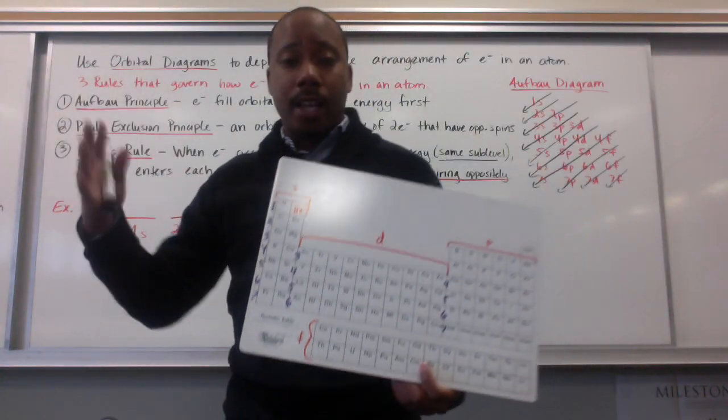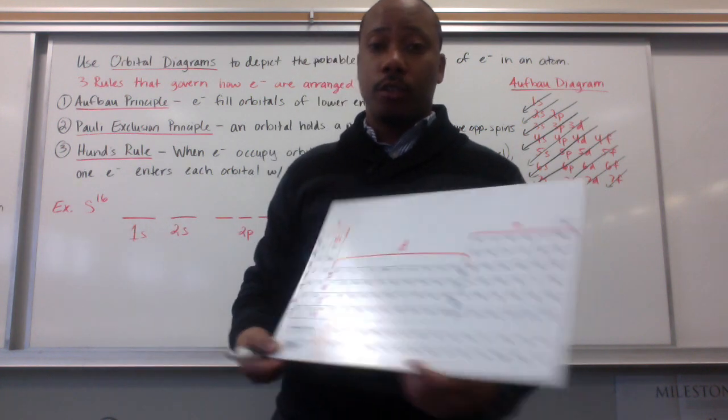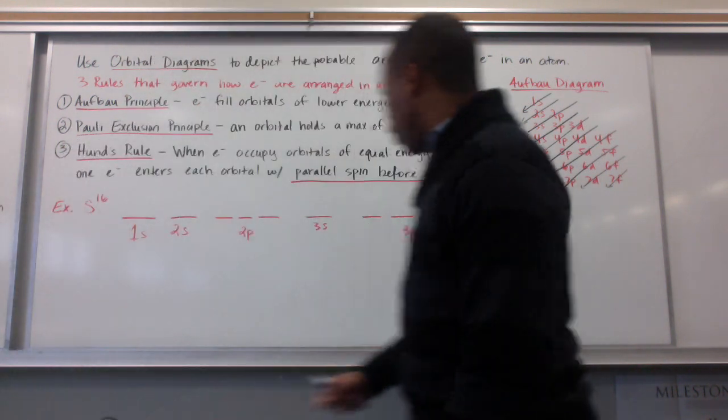So, sulfur's highest electrons are going to be in 3p. So, its valence electrons are in 3p. That would be where I stop.